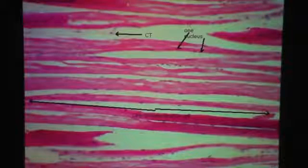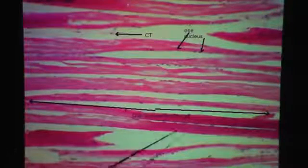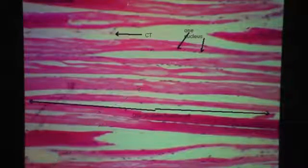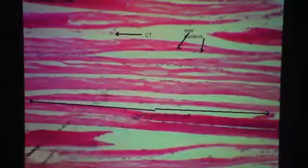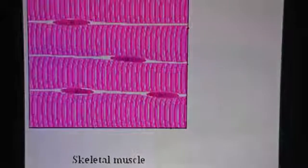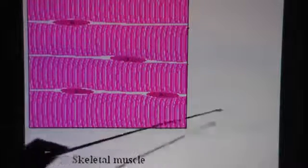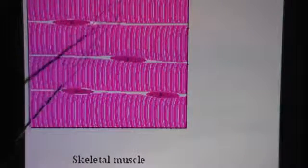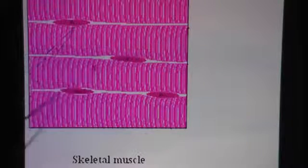This is low power. From here you don't really see the striations too well, but you do see how long the muscle fiber can be, and also how many nuclei one muscle fiber may have — all of these dots would be the nuclei. Back to high power: perfectly parallel bundles of muscle fibers running this way, with striations perpendicular to the length, and here we see a few nuclei.